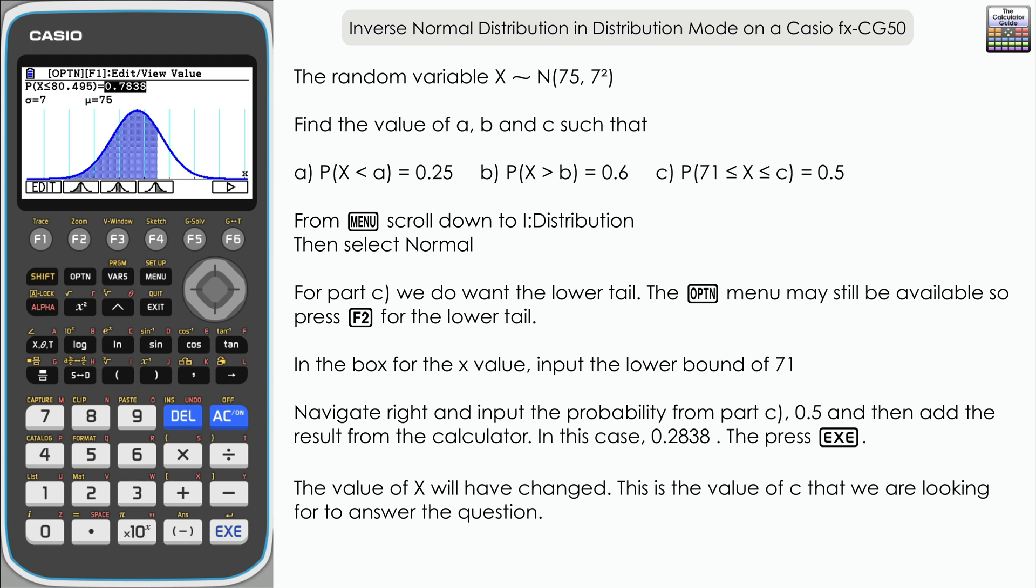So a slightly different way of approaching that question, but we are still able to do it within the distribution feature of the Casio FX-CG50. So there we go, how we can find inverse normal distribution values once we know the probabilities using the distribution feature on the Casio FX-CG50.